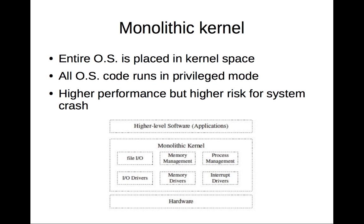In a monolithic kernel, the entire OS is placed in the kernel space, which makes the kernel very large. Everything placed in the kernel runs in privileged mode, so the entire OS code runs in privileged mode. Because of this, the performance will be higher — all the services are placed inside the kernel, so the access time will be less.